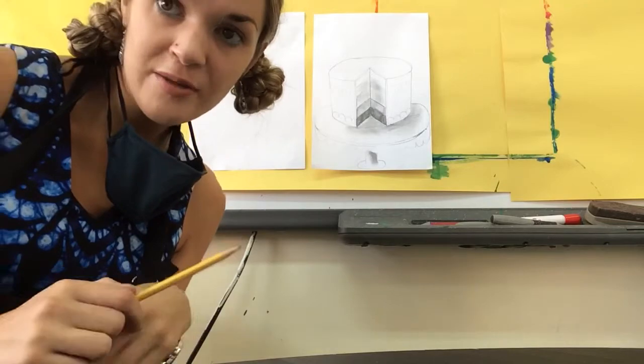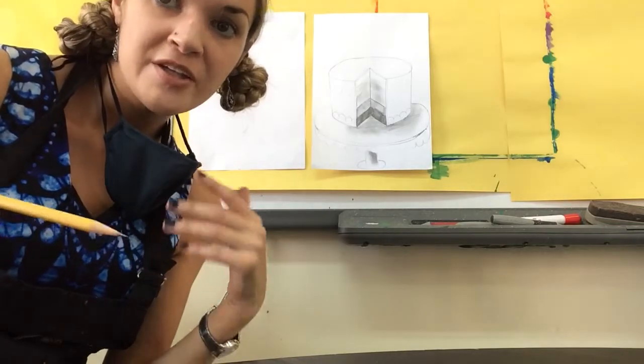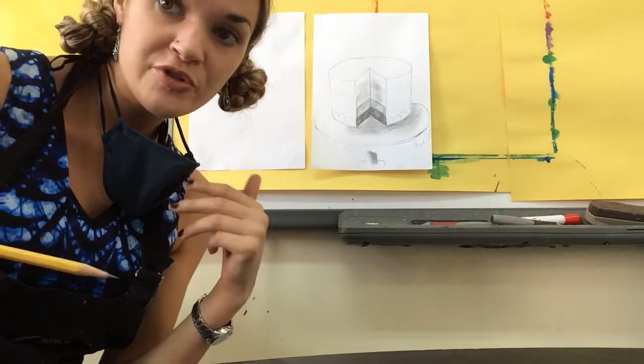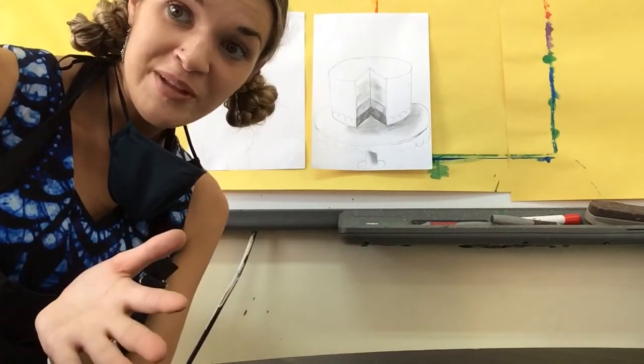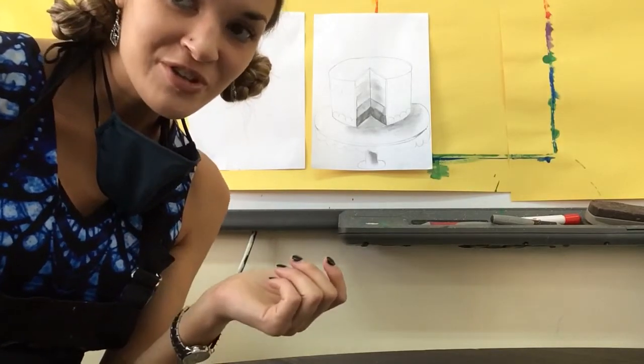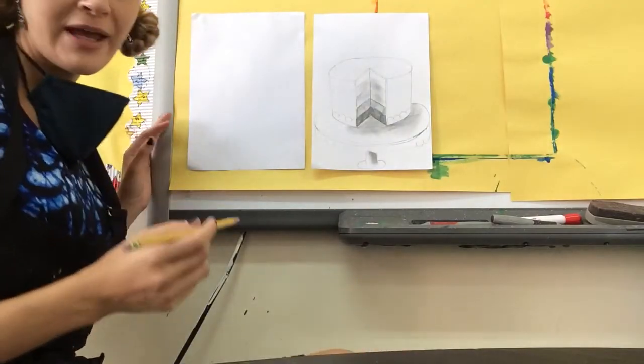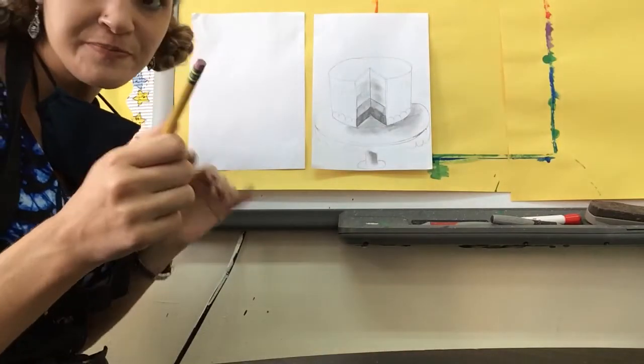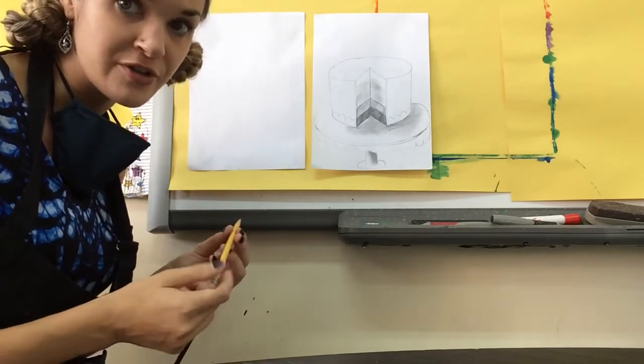On Wednesday we talked a lot about value and how to shade the sphere. Today you're going to apply what you learned on Wednesday, but you're going to apply it to a cake. I'm going to show you how to draw the cake step by step. You need a blank piece of paper, a pencil, an eraser, and if you have some colored pencils that would also be good for today.